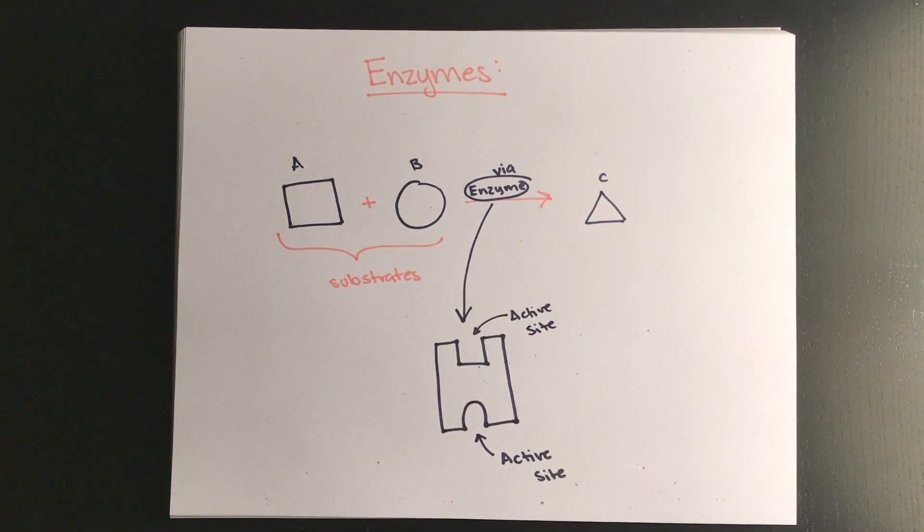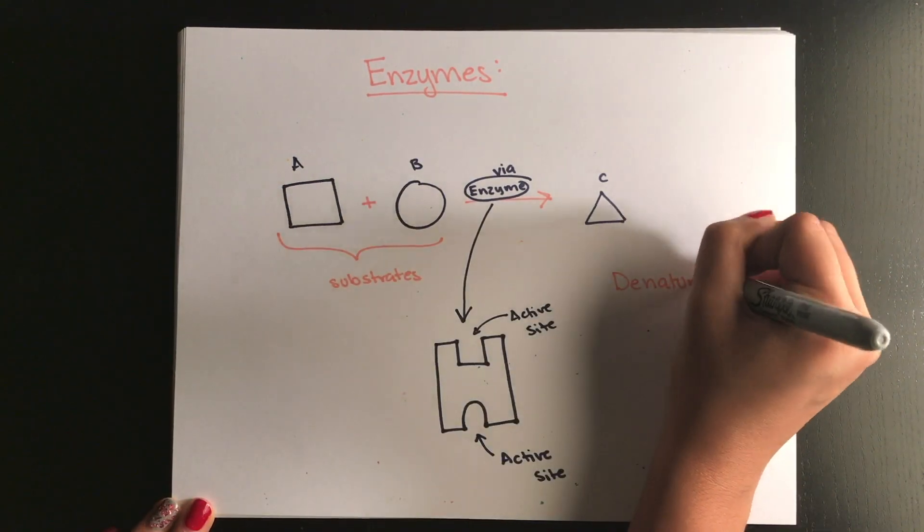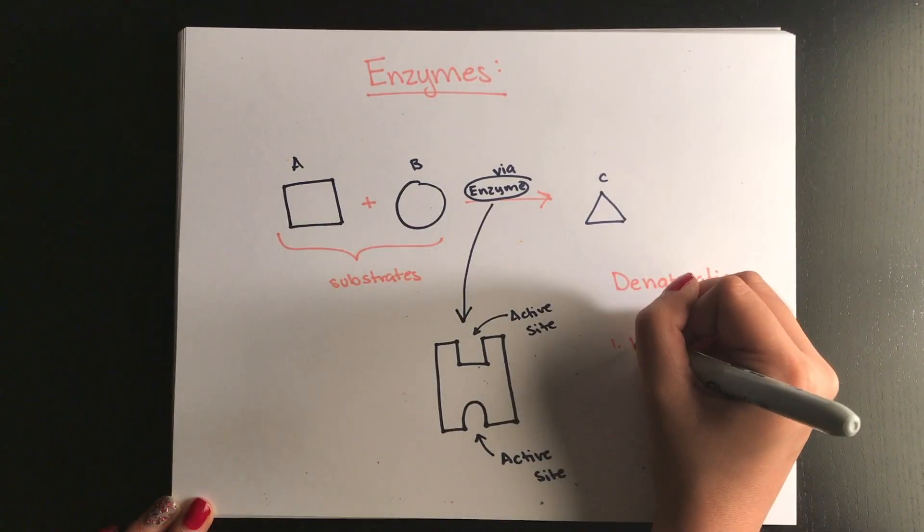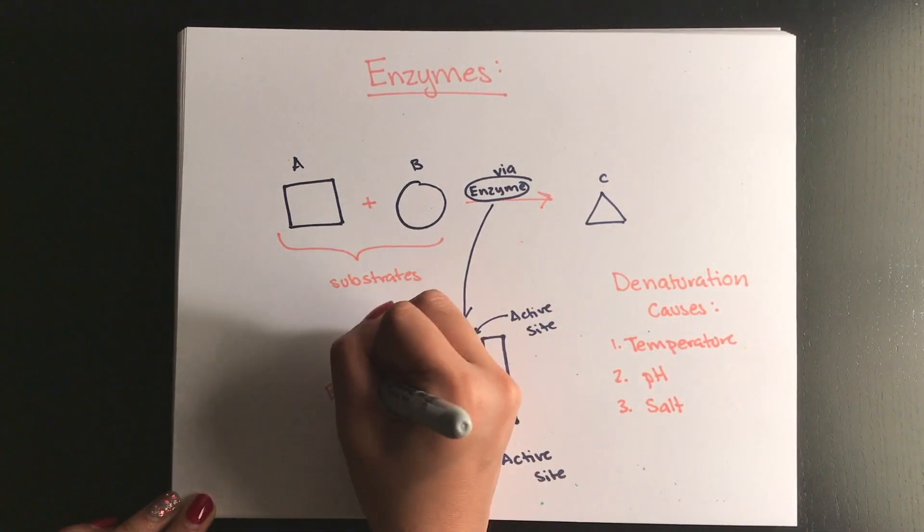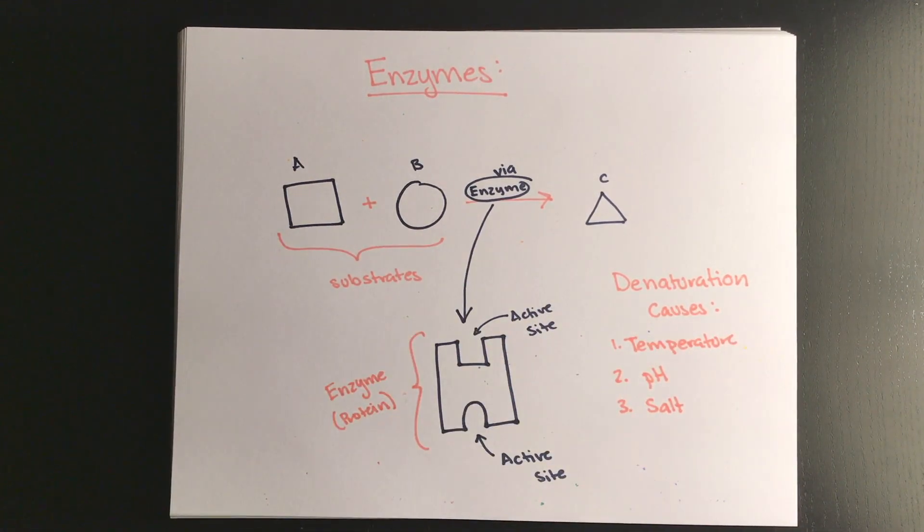Because enzymes are proteins, it's important that their environment is suitable, otherwise they can unfold or denature. Denaturation is caused by heat, pH level changes, or an increased level of salt.